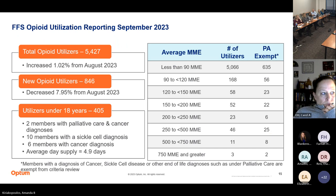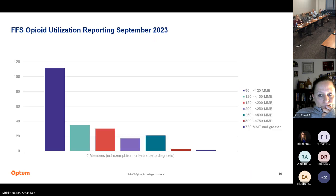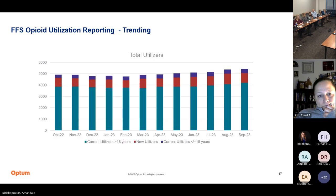Looking at our overall opioid utilization reporting, we did have a slight increase in total opioid utilizers in August but then a decrease in new utilizers. The 18 years and under has been fairly steady at around five days for their utilization overall. The vast majority of patients are in the less than 90 MME and 90 to 120 MME ranges. The overall trend is continuing to increase just slightly, but in August we had more new utilizers that decreased in September — leveling out a bit.